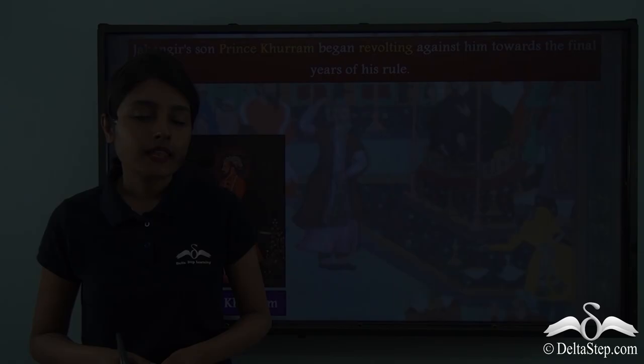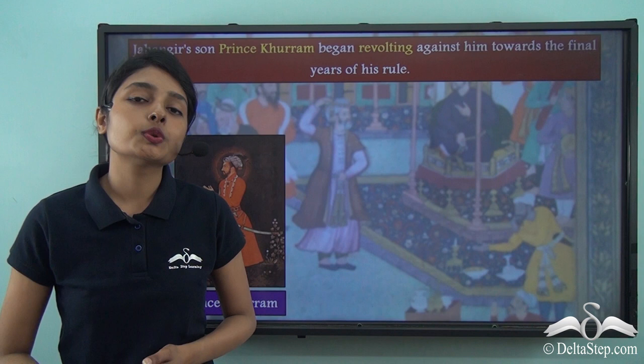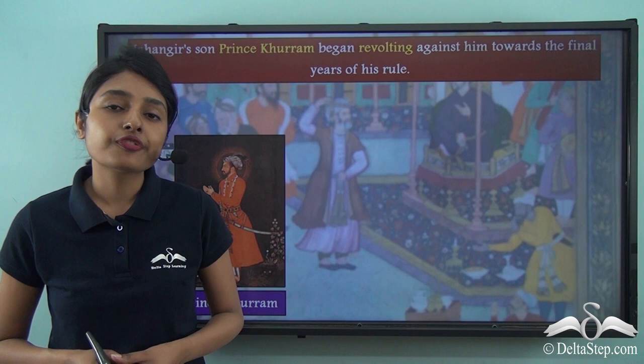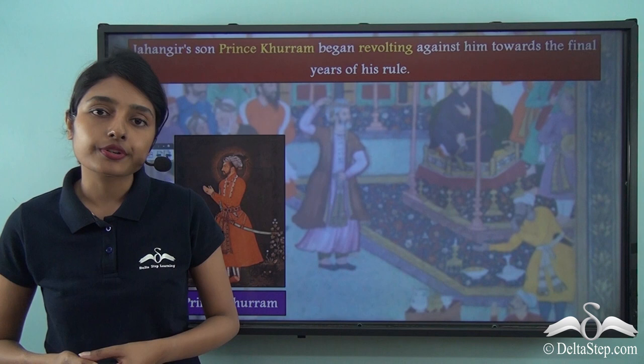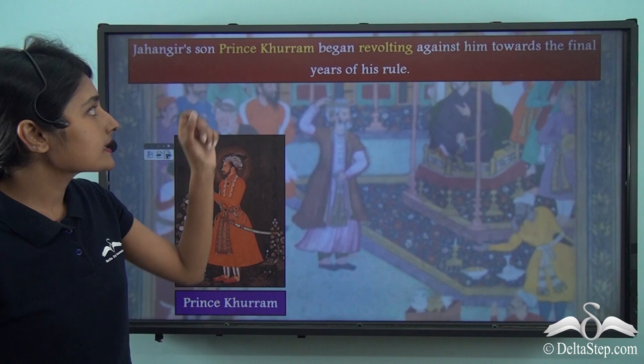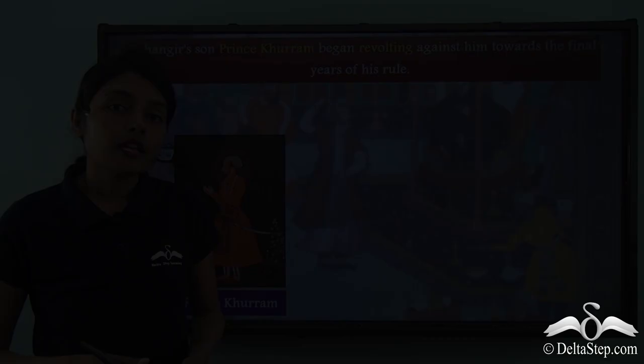History came full circle: just as Jahangir himself — then Prince Muhammad Salim — had revolted against Akbar during Akbar's last years, Jahangir's own son Prince Khurram began revolting against him during his last years. Prince Khurram too was wanting to come to power as the Mughal Emperor, bringing Jahangir's life to the very point from where it had begun.